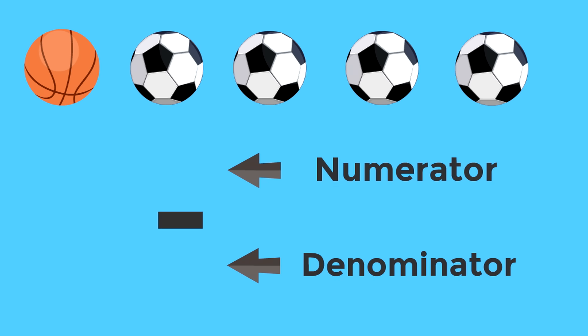So we know a fraction has a line in the middle and the top number is the numerator and the bottom number is the denominator. The denominator shows us the total number of parts or units. How many sports balls are there? Yeah. Five. Five is the denominator. Good job.